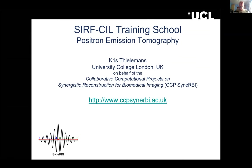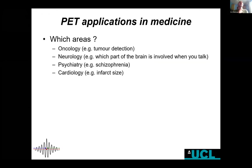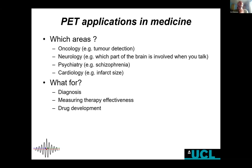I thought it might be useful — I'm not sure how many of you know a bit of PET — so I have a very brief introduction on PET as well. PET is used mainly in oncology for tumor detection or tumor staging, but it can be used for many other indications as well. There is some interesting work on how COVID actually changes the response of the body that you can measure with PET.